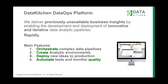Data Kitchen is a DataOps platform, and that's really about helping teams release and deliver analytics faster than they've ever been able to before. By analytics, we mean models or data engineering pipelines. There are four main features: orchestrating complex data pipelines, creating analytic environments, deploying new ideas into production, and automating tests and monitoring quality.